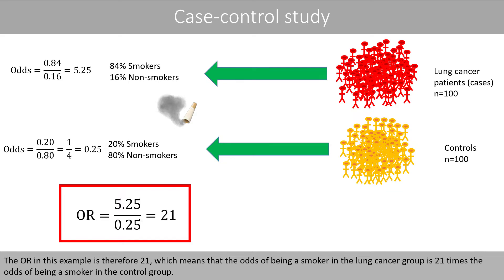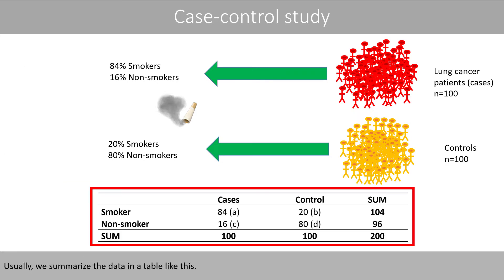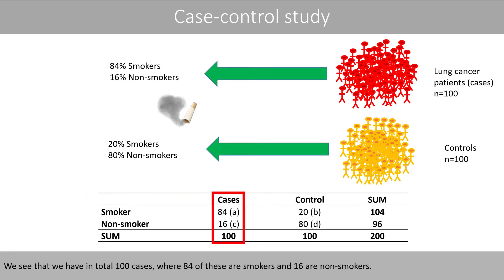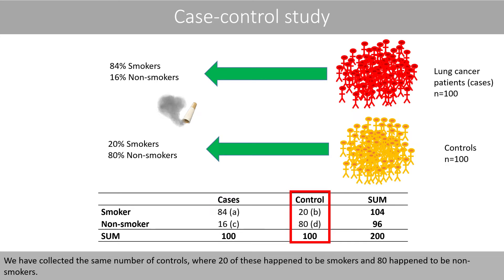The odds ratio in this example is therefore 21, which means that the odds of being a smoker in the lung cancer group is 21 times the odds of being a smoker in the control group. Usually, we summarize the data in a table like this. We see that we have in total 100 cases, where 84 of these are smokers and 16 are non-smokers. We have collected the same number of controls, where 20 of these happen to be smokers and 80 happen to be non-smokers.